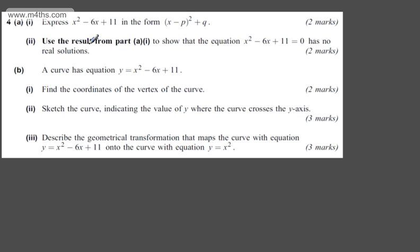This is question number 4. In the first part, we're asked to express x squared minus 6x plus 11 in the form (x - p)² + q. The question carries two marks.